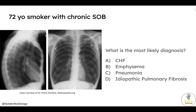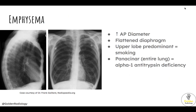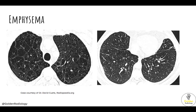Next question: 72-year-old smoker with chronic shortness of breath. What is the most likely diagnosis? This is emphysema. The tip-offs here are an increased anterior-to-posterior diameter and flattening of the hemidiaphragms — for reference, the hemidiaphragms should curve superiorly. The most common cause is smoking, which will typically be upper lobe predominant. If the question stem mentions panacinar emphysema, which involves the entire lung symmetrically, that is a buzzword for alpha-1 antitrypsin deficiency — the patient may have additional liver dysfunction. On CT, emphysema presents as focal black areas or radiolucencies, representing dilatation of the airways as well as alveolar destruction.